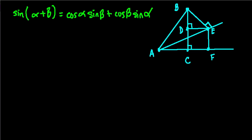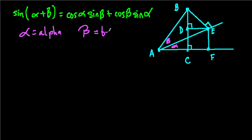We should start by labeling our alpha and our beta, the two angles we're looking at. This angle right here is going to be alpha, and this one is going to be beta. So if this is beta and this is alpha, this whole angle right here is alpha plus beta.